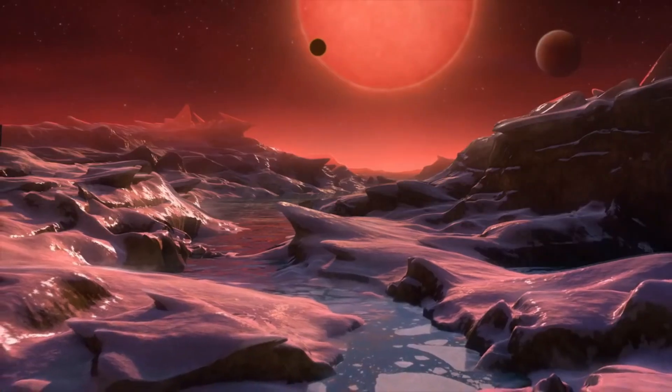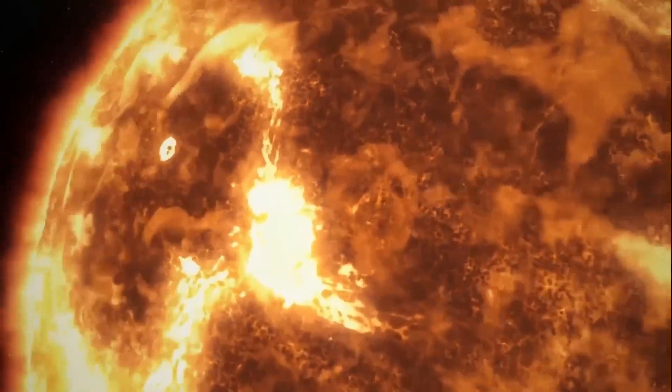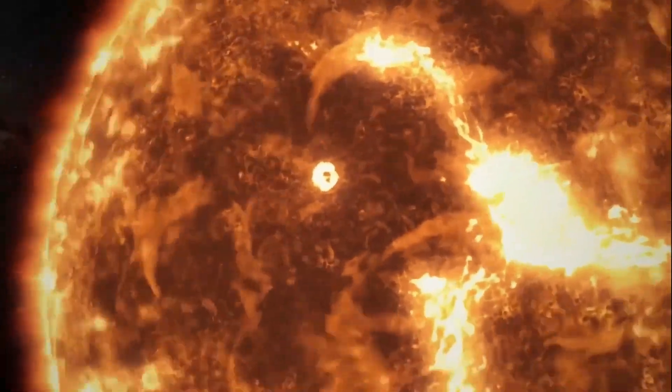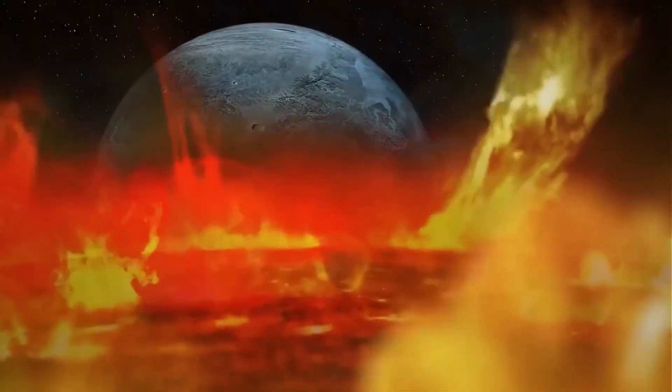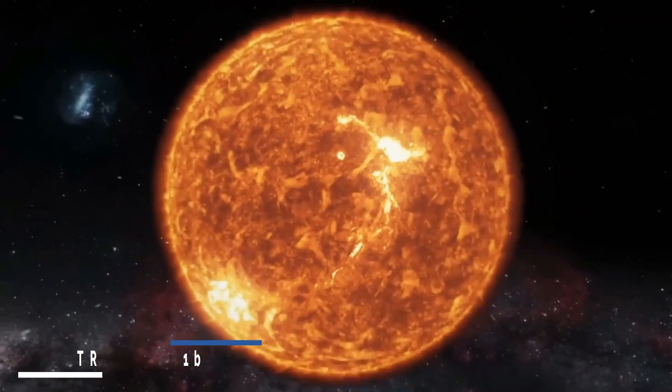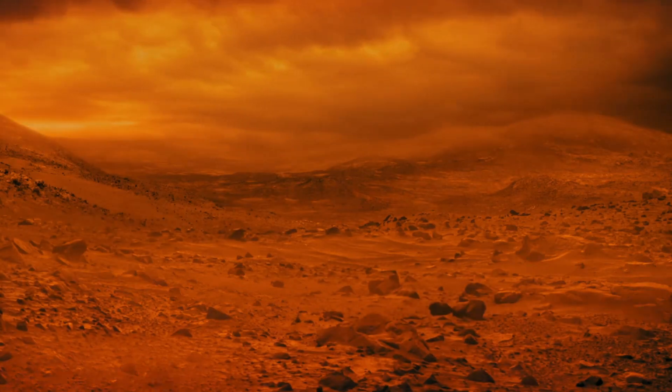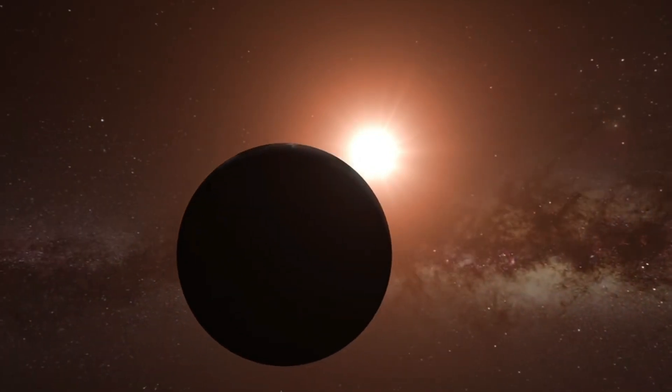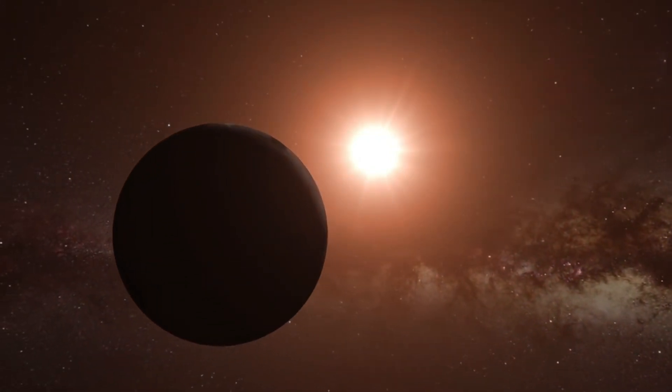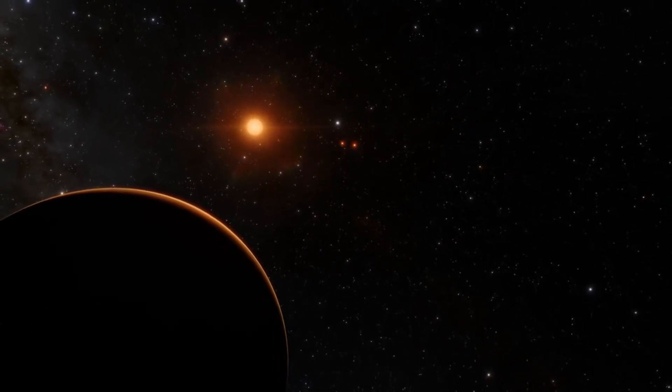However, there's a caveat to consider. M-dwarf stars emit high-energy radiation that could potentially damage planetary atmospheres or nascent extraterrestrial life due to their heightened activity compared to our Sun. Earlier observations of TRAPPIST-1b provided insights into whether the celestial body was a barren rock or possessed a discernible atmosphere. Tidally locked to its star, one side of the planet remains in perpetual darkness while the other perpetually faces its star.